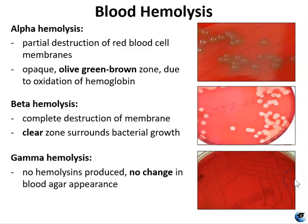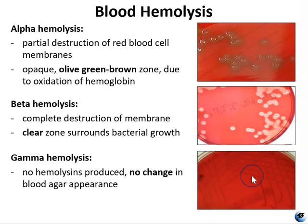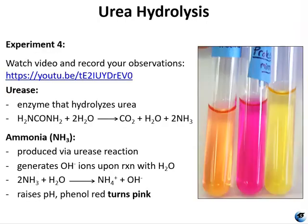Both alpha and beta results are considered positive for hemolysins, whereas gamma is negative. For experiment four, you're going to look at urea hydrolysis. Urea is a product of carboxylation of certain amino acids. It can be hydrolyzed to ammonia and carbon dioxide by bacteria containing the enzyme urease. The only nutrients in the urea slant agar are urea and a trace of yeast extract.